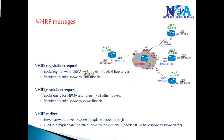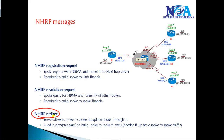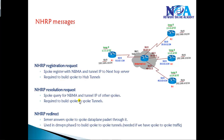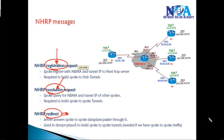The second message is the NHRP Resolution Request, sent by a spoke when it wants to query for another spoke's NBMA address. The spoke sends a query to the hub router asking for the NBMA address of another spoke it wants to communicate with. The third message is the NHRP Redirect, used in DMVPN Phase 3 implementations — we'll talk about this in more detail in the advanced section. In Phase 3, the server informs the spoke about the short path for spoke-to-spoke communication. These are the three NHRP messages: Registration Request, Resolution Request, and Redirect.